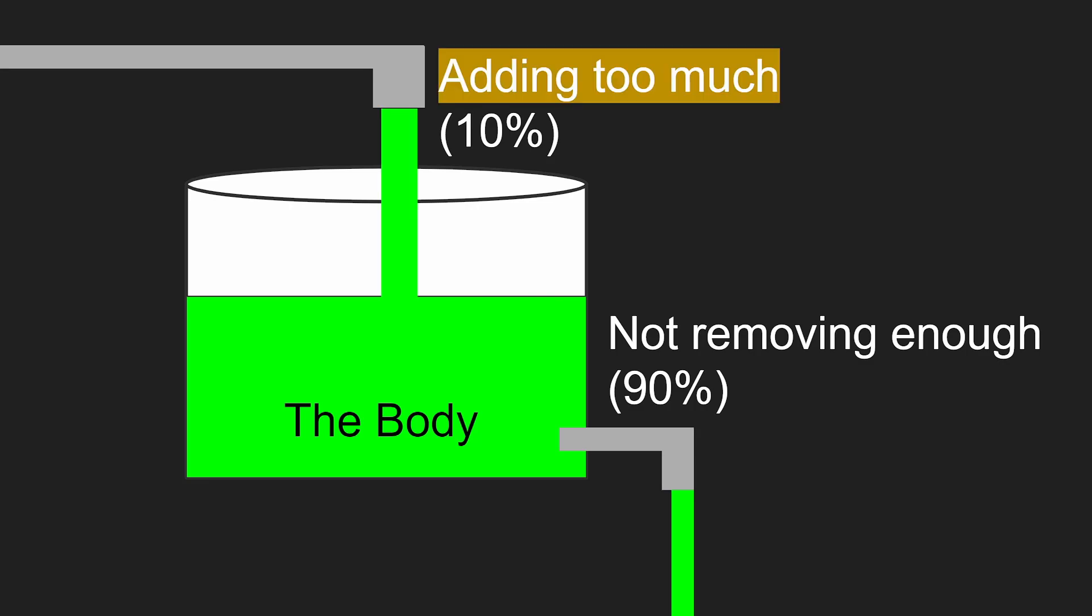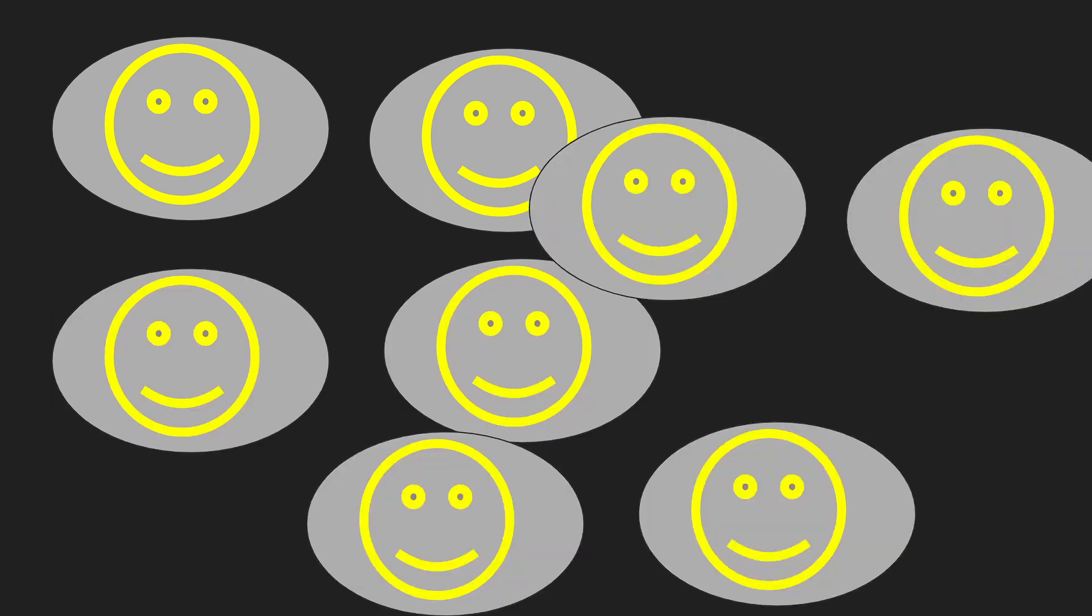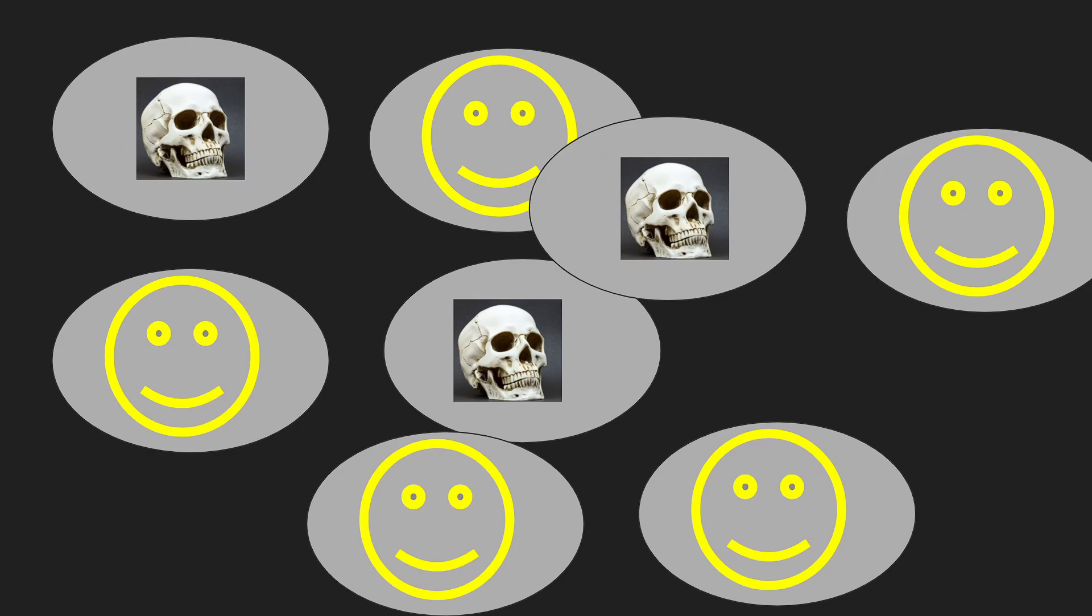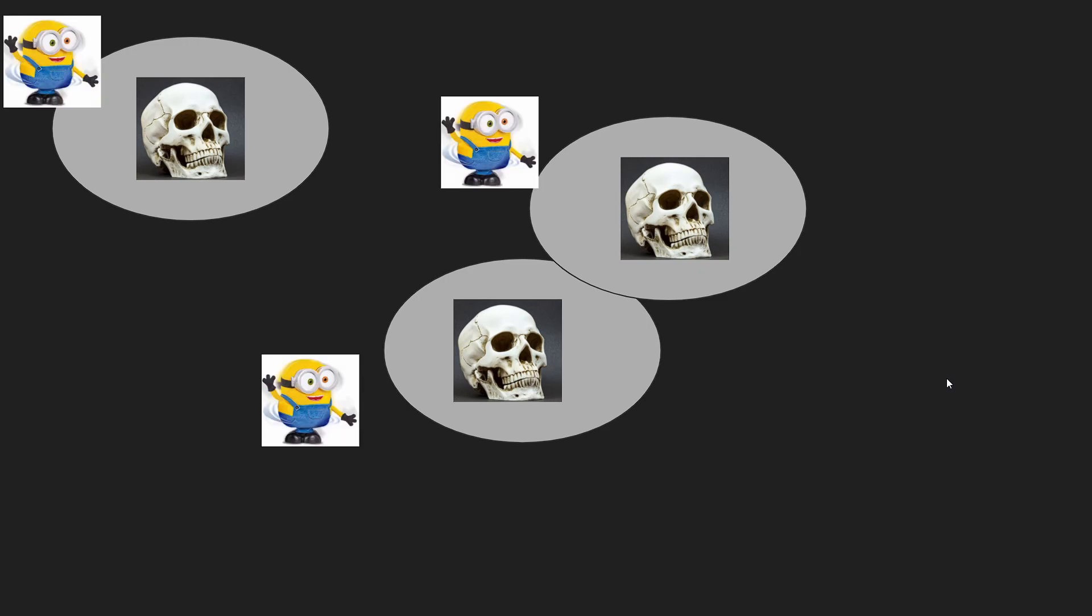We will start with adding too much. It helps to recognize the body as a complicated machine with lots of biochemicals. Part of the machinery includes the cells in the body that are constantly dividing to make new cells and as time goes on the older cells die off. And when the cells die off, the body has chemicals to break down those dead cells.